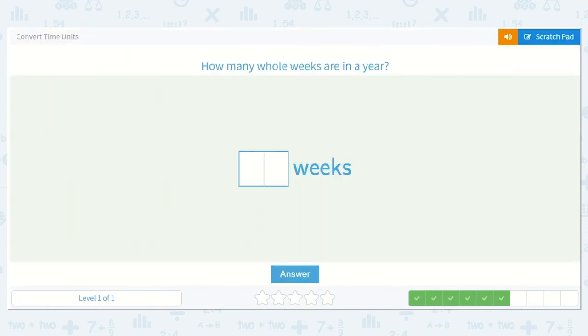It says how many whole weeks are in a year? Do you know how many weeks are in a year? Yeah, there are 52 weeks in a year. So our answer would be 52.